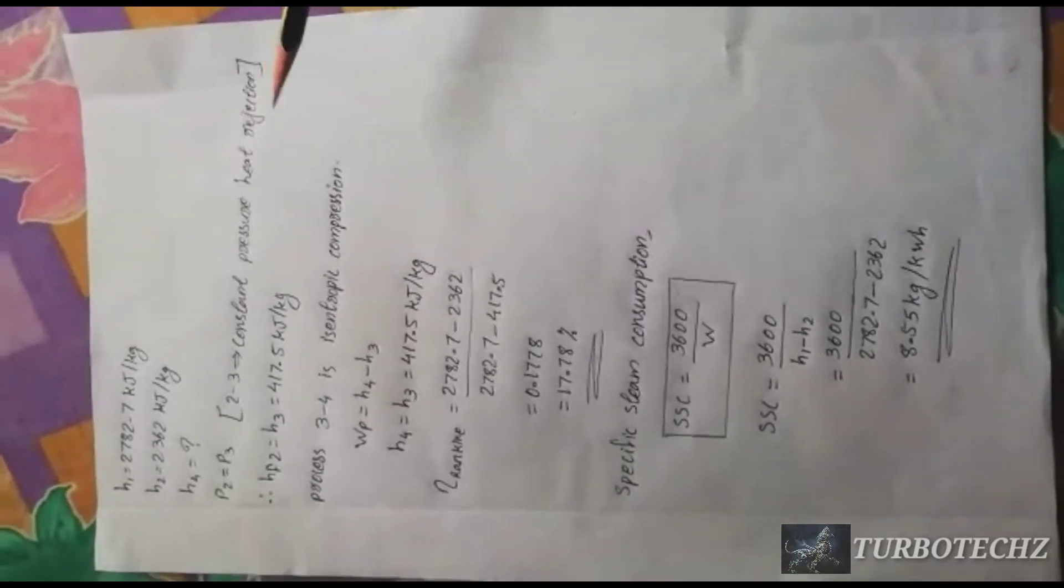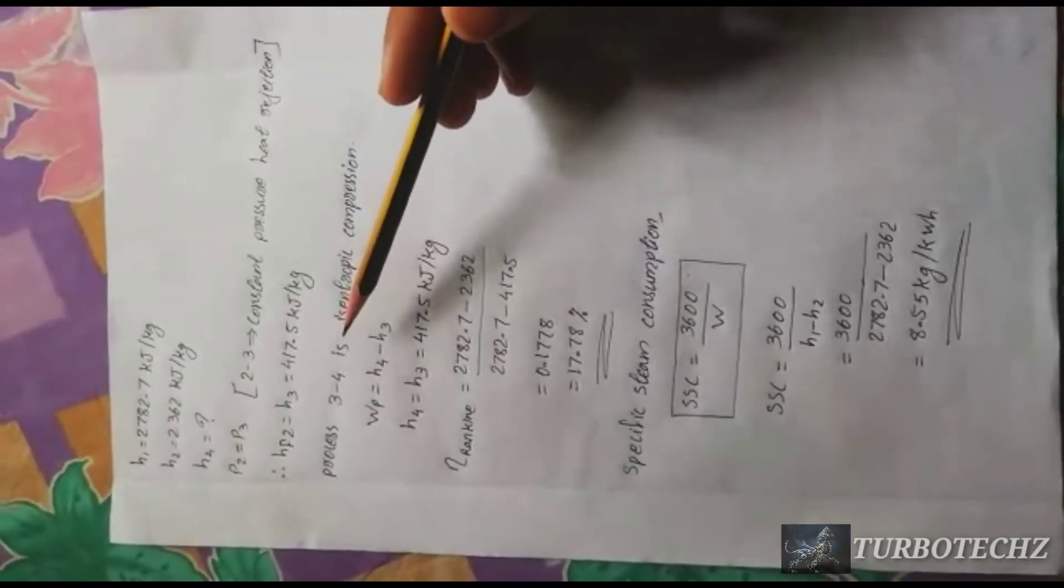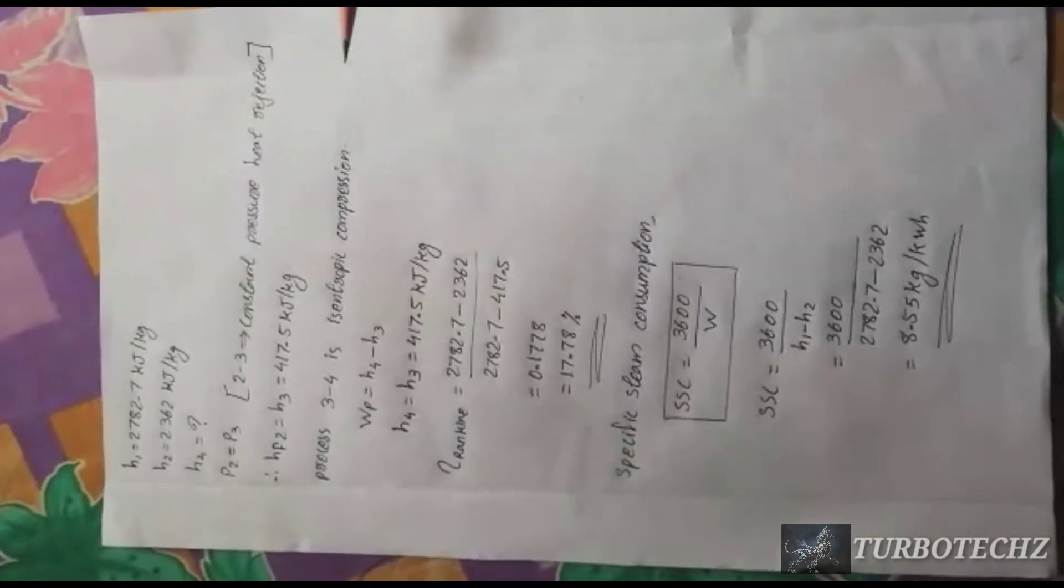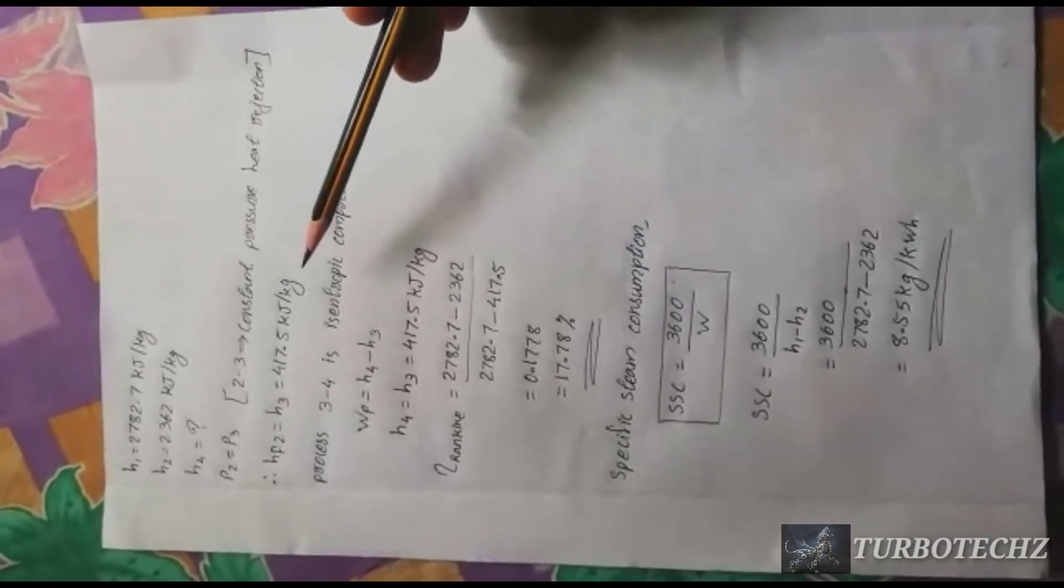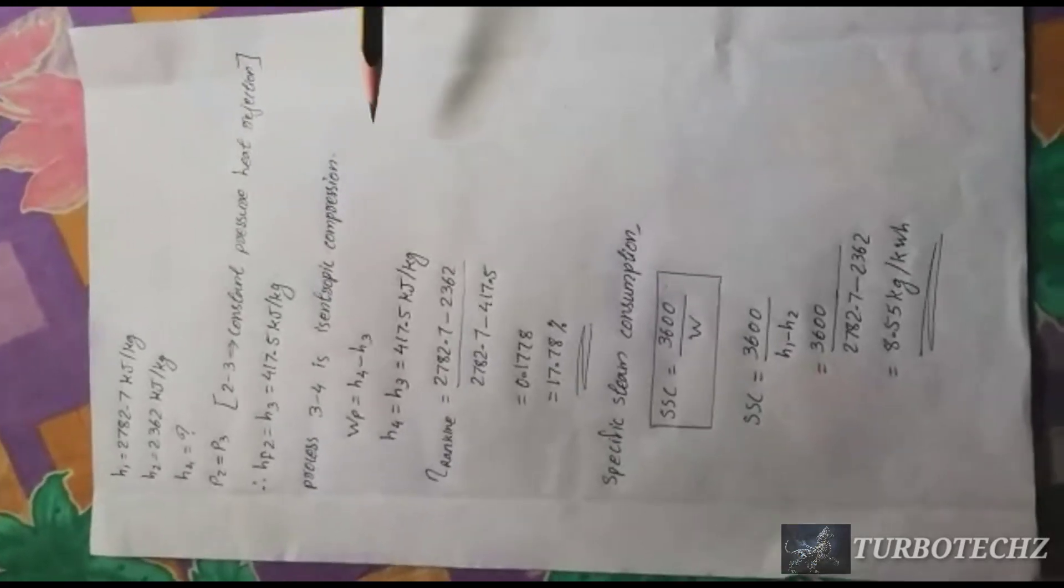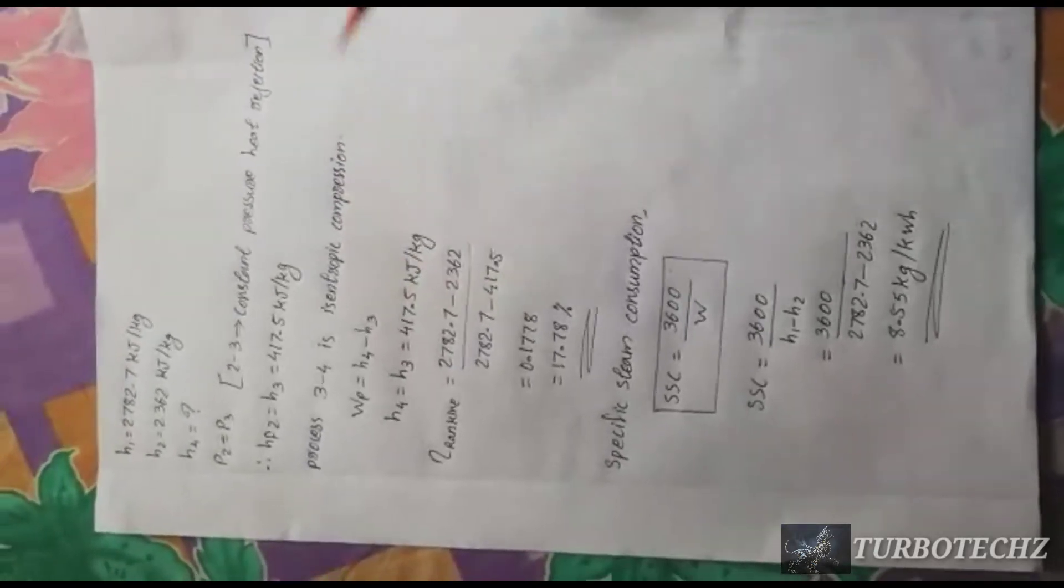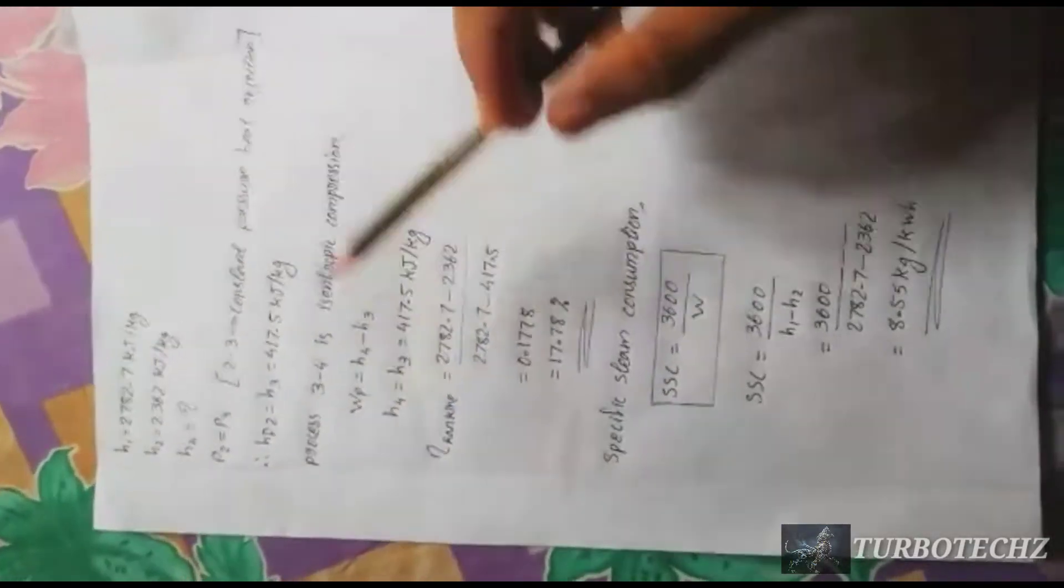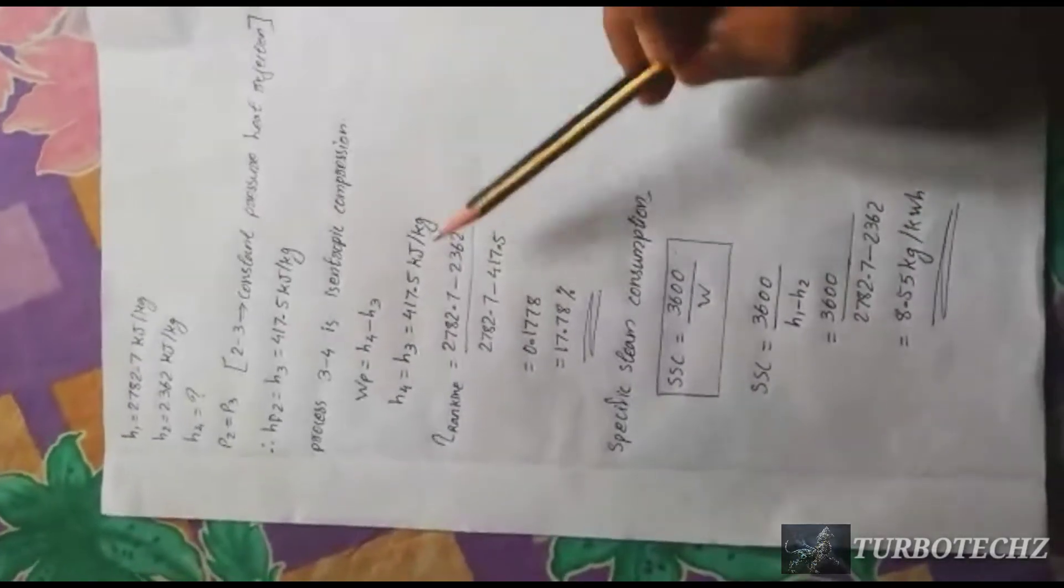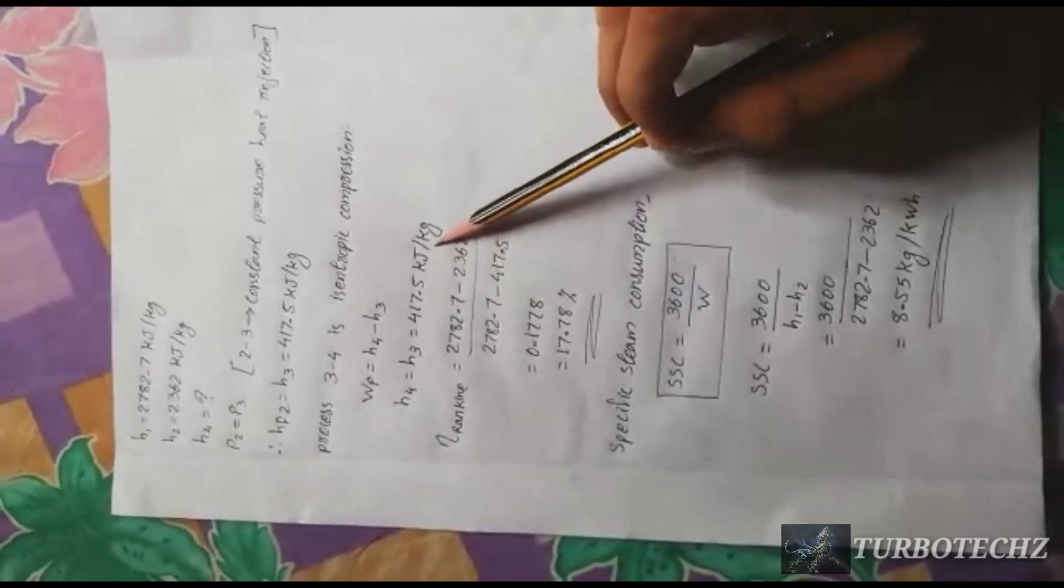H4 value is equal to h3. The process of 2 to 3 is constant pressure and heat rejection. H2 equals h3. The process of 3 to 4 is constant pressure pump power. The equation is h4 minus h3. Now, the problem says we have to neglect it. H4 equals H3, that means H3 equals H4. 417.5 kJ per kg.